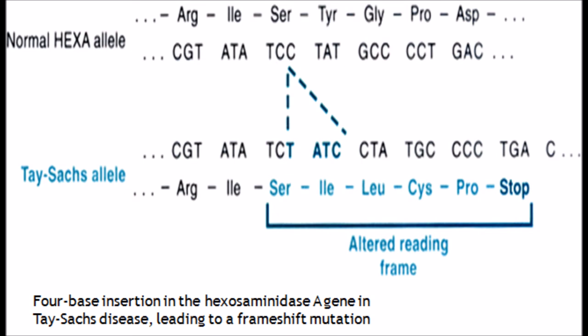Both parents have to be carriers of the hexamutation to be at risk of having a child with Tay-Sachs disease. If both parents are carriers, the children will have a 25% chance of developing the condition. There is currently no cure for Tay-Sachs disease, so treatment involves making the child feel as comfortable as possible by treating the associated symptoms.